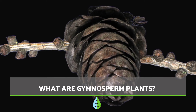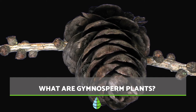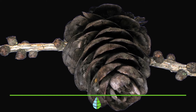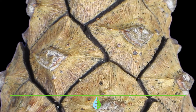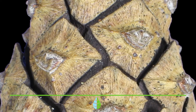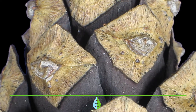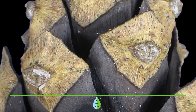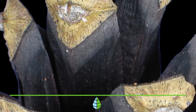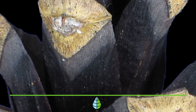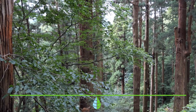Gymnosperm plants are vascular plants and spermatophytes — they are produced from a seed and they also generate seeds. The Greek word gymno means naked while sperma means seed. Therefore, its name indicates that its seeds are naked and do not develop in a closed ovary, as fruit would.